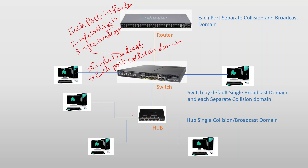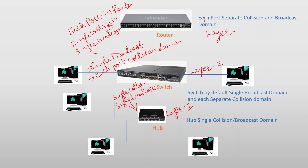If you have a hub, this is a single collision domain and a single broadcast domain. The hub operates at layer 1. The switch operates at layer 2, and the router operates at layer 3.